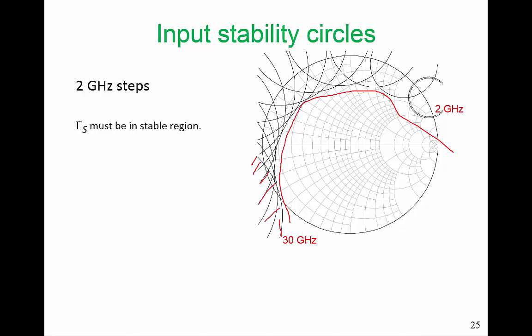But getting back to our frequencies that we're really interested in, 2, 4, 6, 8, it is this stability circle. This is the 10 GHz circle, and this is the 12 GHz circle. Well, you can see here that if we just look at the 8 GHz circle, yes, we could be stable if Gamma S is out here.